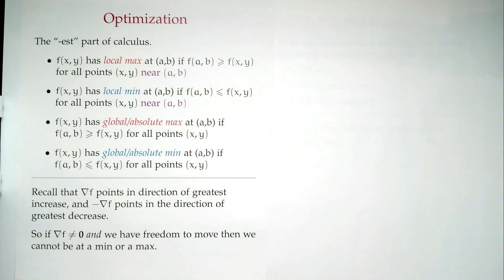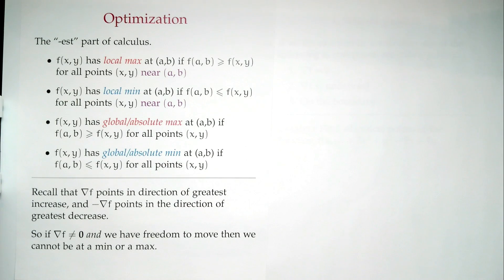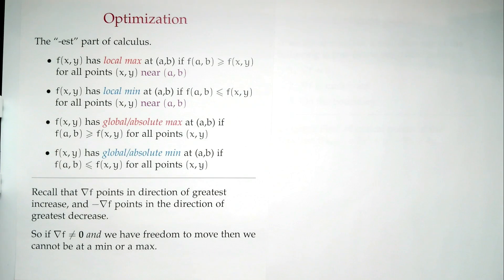If it's the smallest possible value over all the domain, it's the global or absolute minimum. So those are the two ideas: local versus global. Do I care about things nearby, or do I care about the whole thing? We'll look at both over the next few days — today we'll understand things locally, next time globally.